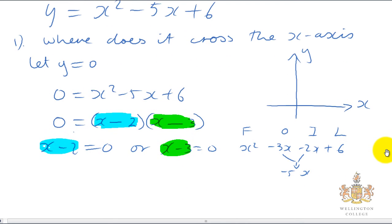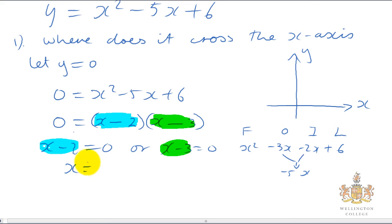So from that we can now find our value of x. So from this one, solve it, x must equal 2. When x minus 3 equals 0, we know that x equals 3. So we've got two possible points where it can cross the x-axis. One at 2 and one at 3. So we know our graph is going to cross the x-axis.